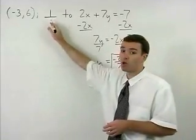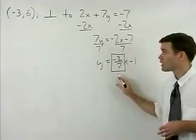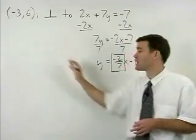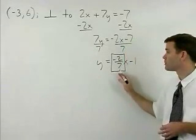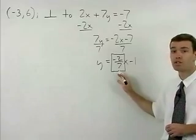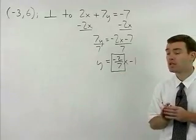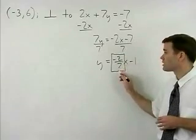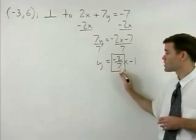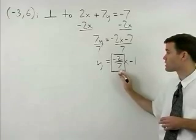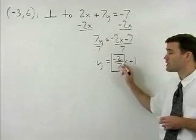And since our line is perpendicular to this one, the slope of our line will be the negative reciprocal of this slope. To find the negative reciprocal of a fraction, all you have to do is flip the fraction and change the sign. So the negative reciprocal of -2/7 is positive 7/2.